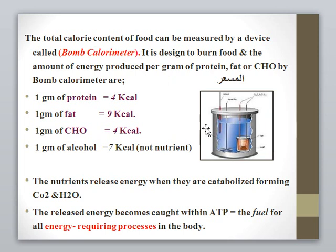The bomb calorimeter is designed to burn food. The amount of energy produced per gram by the bomb calorimeter: one gram of protein produces 4 kilocalories, one gram of fat produces 9 kilocalories, carbohydrate produces 4 kilocalories, and alcohol produces 7 kilocalories. But alcohol is not a nutrient — the nutrients are protein, fat, and carbohydrate.